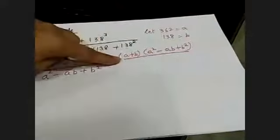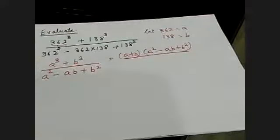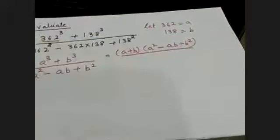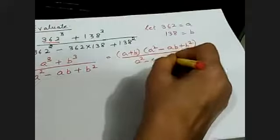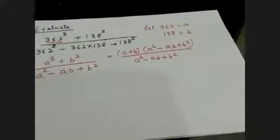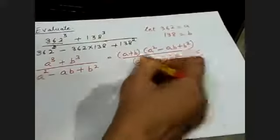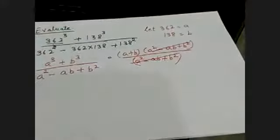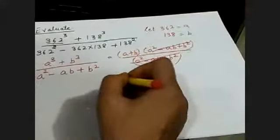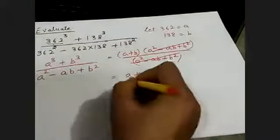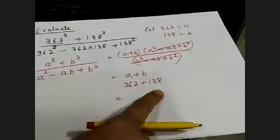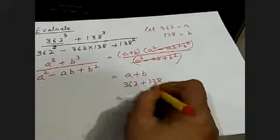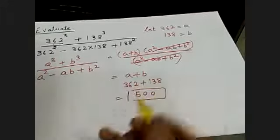The identity says A cube plus B cube equals A plus B in the first bracket, times A squared minus AB plus B squared in the second bracket. Your denominator is exactly A squared minus AB plus B squared, so those terms cancel. What remains is A plus B. Putting A equals 362 and B equals 138, you get 362 plus 138 equals 500. This is the answer.